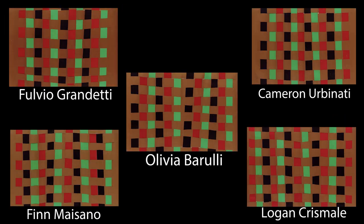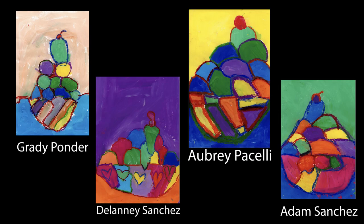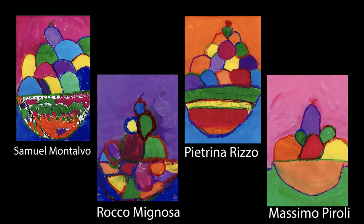We enjoyed learning about Kwanzaa and the use of the Makeke placemat during their community celebrations. Claude Monet was an impressionist painter, often using tints of color to create moody landscapes. We learned the word tint, that is made when color is added to white and creates different values in our art. These bowls of ice cream are simply sumptuous.